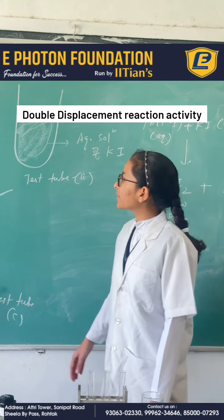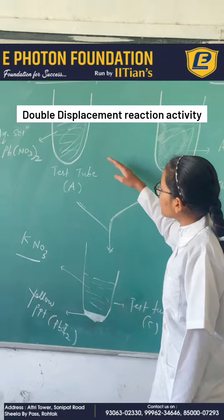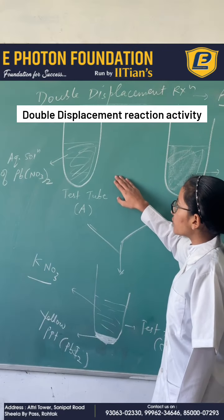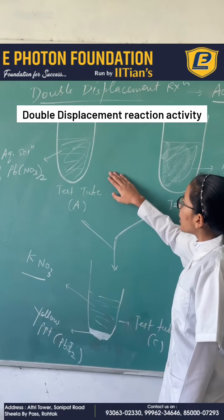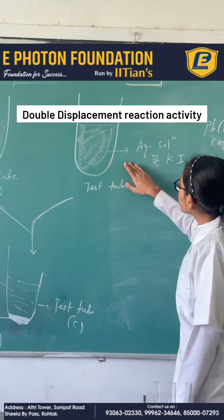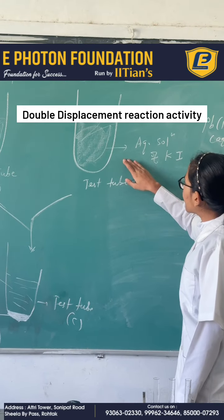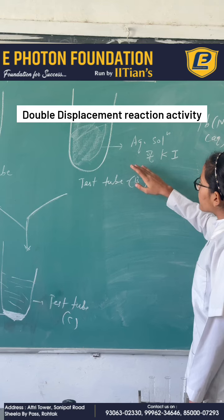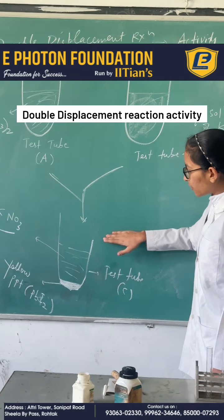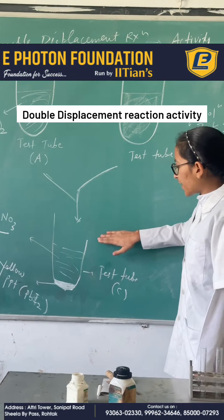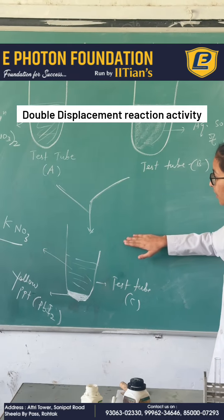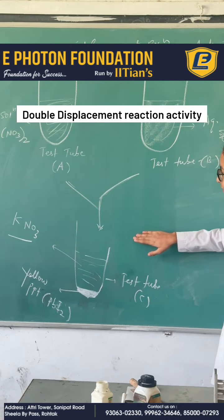First of all, take test tube A and mark it with A. Take aqueous solution of lead nitrate in this test tube, and in another take aqueous solution of potassium iodide. We mix them and get a yellow precipitate of potassium iodide and an aqueous solution of potassium nitrate.